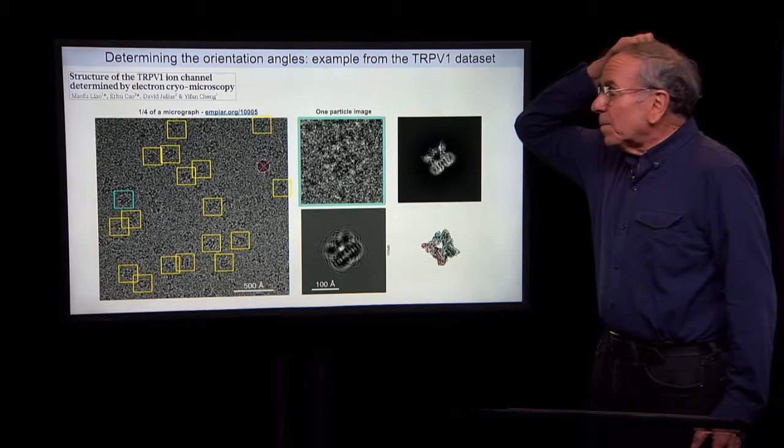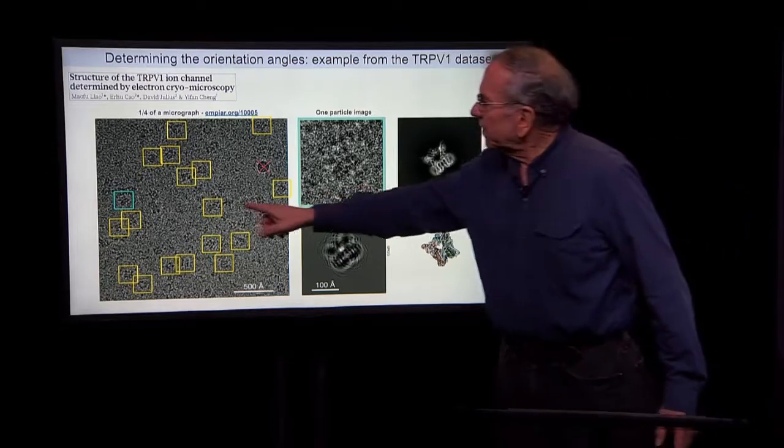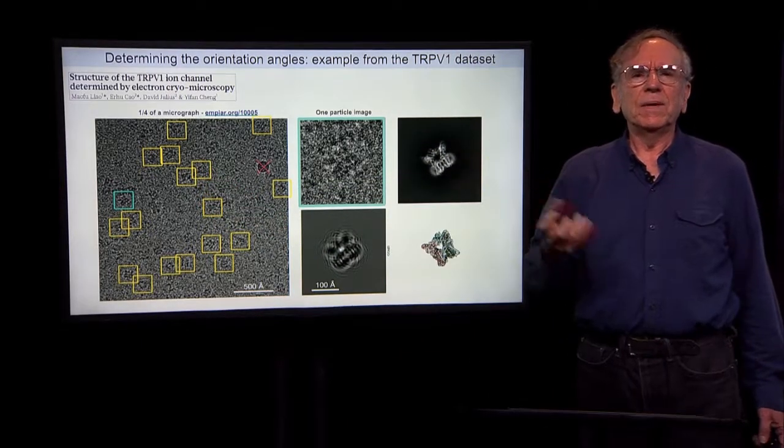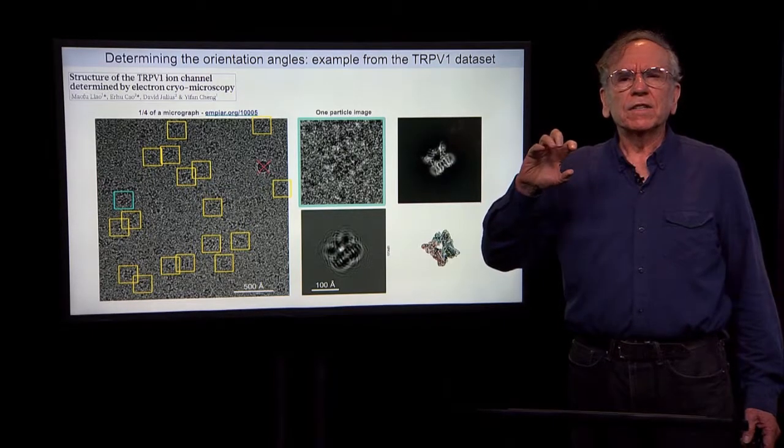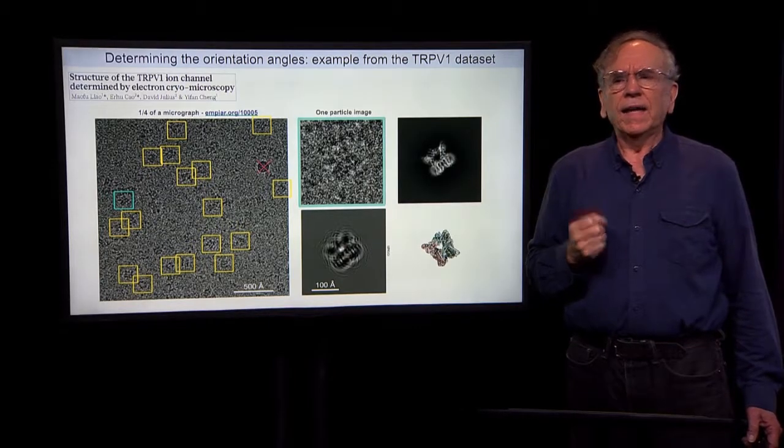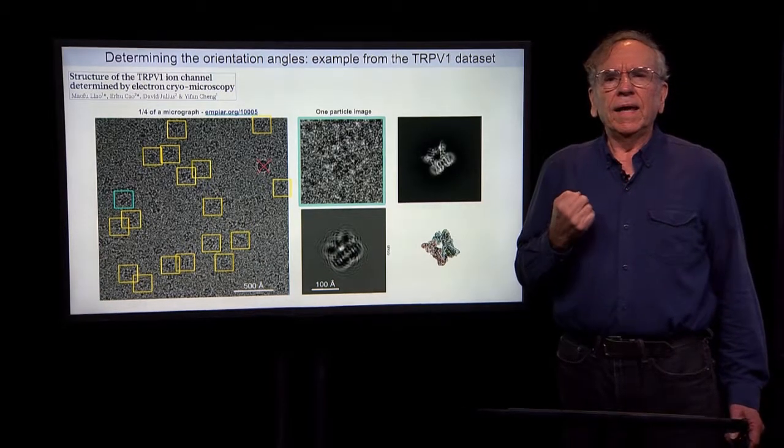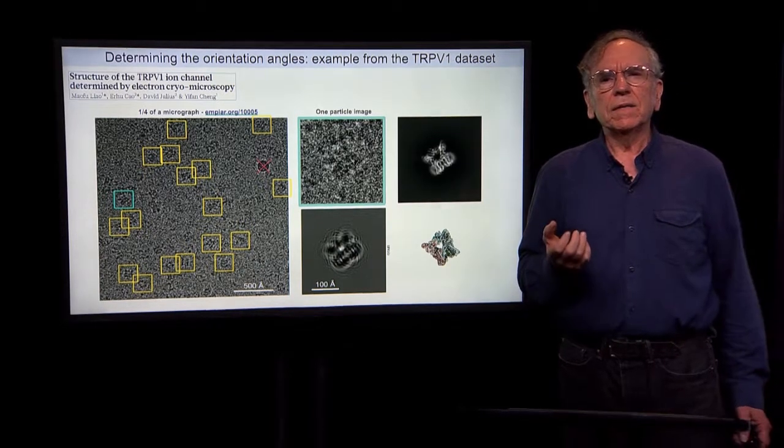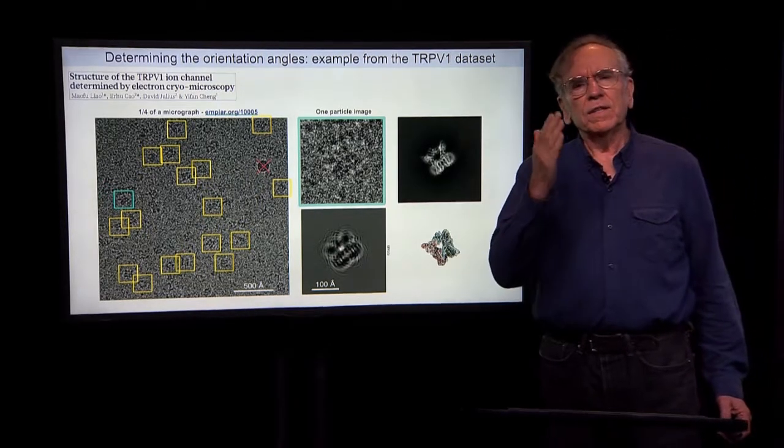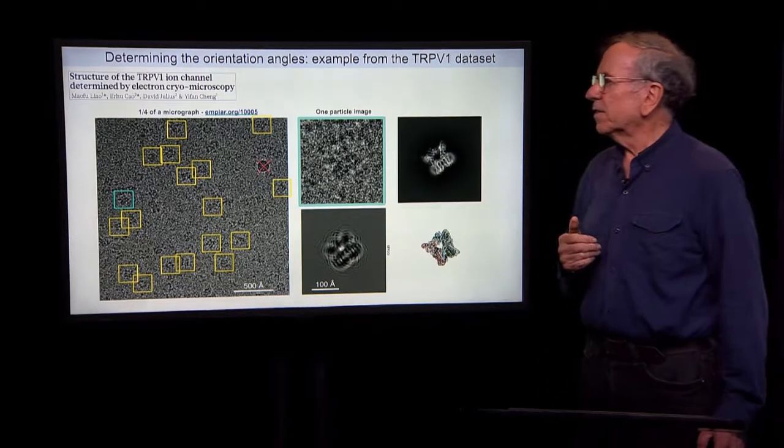Now, the problem with that process in the case of cryo-EM is we have here images that represent projections of three-dimensional objects, but the three-dimensional objects are oriented randomly in the ice, and we don't know what those orientations are. And so this is a very fundamental problem in single-particle reconstruction, which is how do we know the orientation so that we know at what angle to insert that slice into the 3D Fourier transform.